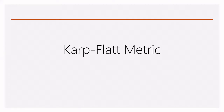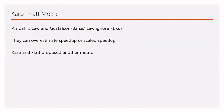This session is about the third metric for performance analysis: the Karp-Flatt metric. Both Amdahl's law and Gustafson-Barsis's law ignored the parallel overhead, which we call Kappa. Without this overhead, both are overestimating the speedup or even scaled speedup. Karp and Flatt proposed another metric, named after themselves, which experimentally determines the serial fraction that can significantly contribute to performance analysis.